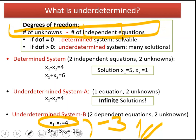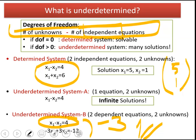This is unlike the previous determined case where degrees of freedom is zero and we have only one solution vector: x1 = 5, x2 = 1. There is no other solution that can satisfy that set of equations.